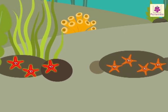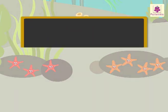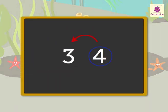There are three red and four orange starfish. We can say that there is one less red starfish than the orange starfish.